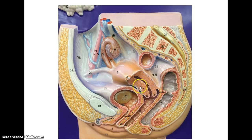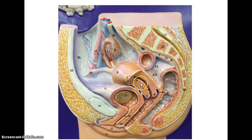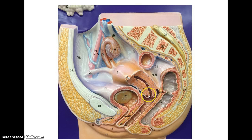Then we have the uterus, whose general function is implantation of the developing embryo if the egg is fertilized by a sperm. Specific parts you need to know: five is the endometrium, which is the layer that grows and sloughs off during a woman's menstrual cycle. Seven is the myometrium, the muscular layer that expels the endometrium in a normal menstrual cycle or expels the fetus during pregnancy. Number six is the cervix, which is the bottom of the uterus.